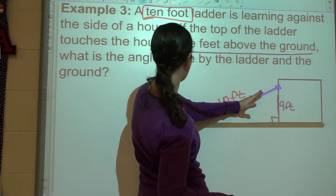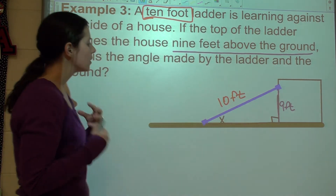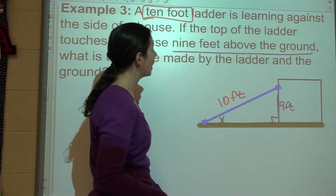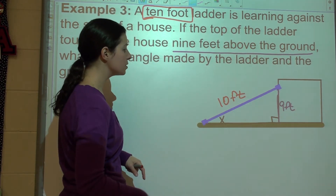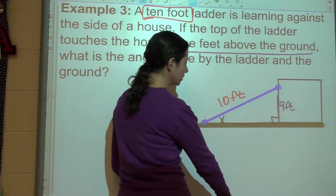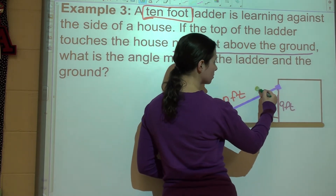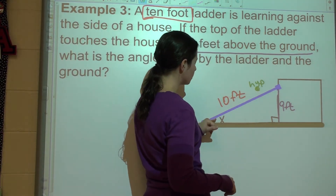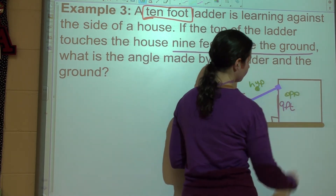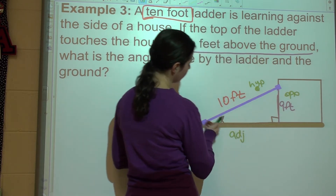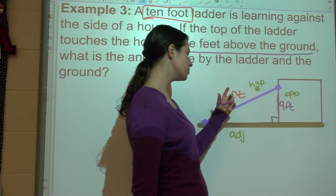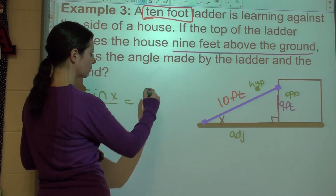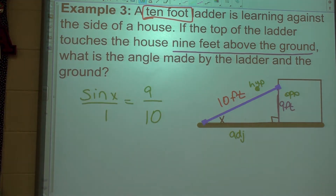We're looking for the angle made by the ladder and the ground — that's the angle down at the base. Let's label all sides. The side across from the right angle is the hypotenuse, which is the 10-foot ladder. My angle is at the bottom, so across from it is the 9-foot side — that's the opposite side. The bottom of the triangle is the adjacent side. I know the opposite and hypotenuse, so I'm going to use sine. Sine of X equals 9 over 10, since opposite goes over hypotenuse.